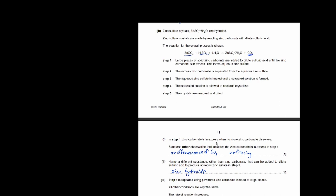Step 1 is repeated using powdered zinc carbonate instead of large pieces; all other conditions are the same. The rate of reaction increases. The reason is that powdered zinc carbonate has a larger surface area, so more molecules are exposed to H2SO4, allowing more collisions to occur, which increases the rate.